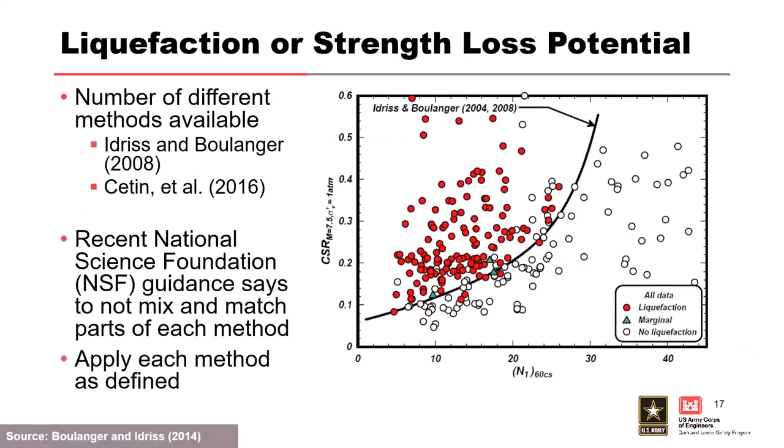For liquefaction or strength loss potential: there's not a lot of guidance yet on strength loss potential — it's more about looking at material properties and whether the soil might lose strength with large amounts of strain. For liquefaction, there are a number of methods to evaluate triggering. Two notable ones are Idriss and Boulanger, who published a monograph in 2008 from the Earthquake Engineering Research Institute, and Seaton et al., who published a paper on triggering more recently.